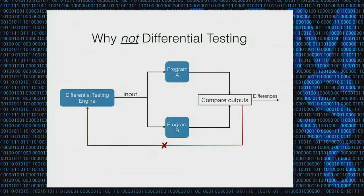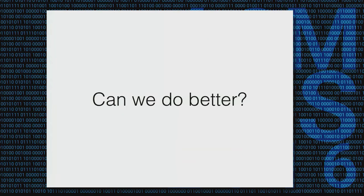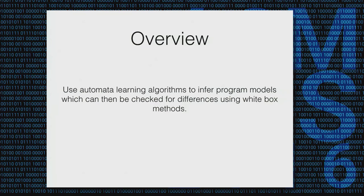In traditional black box differential testing, you just generate new inputs and ignore all previous runs. We would like to ask if you can do something better — if you can utilize the previous outputs from the applications to guide the testing process. We are going to do that by using automata learning algorithms to infer models of the programs from the inputs we send. Instead of checking individual inputs for differences, we will compare the models themselves, and comparing the models will yield differences in the actual implementations.